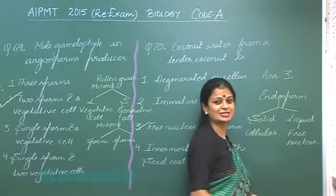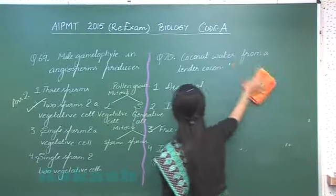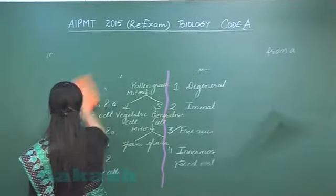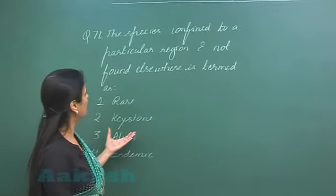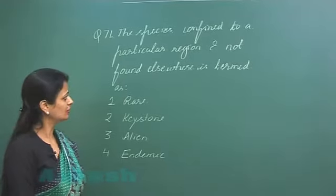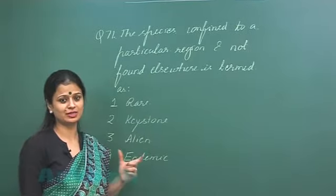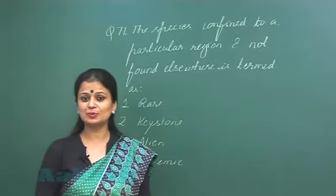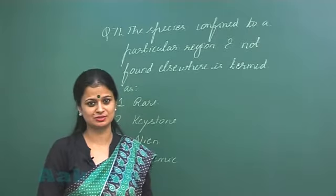So now let's move on to the question number 71. The species confined to a particular region and not found elsewhere is termed as? Now if we look at the first option, rare species. Now the rare species, they are those which naturally have small population size.